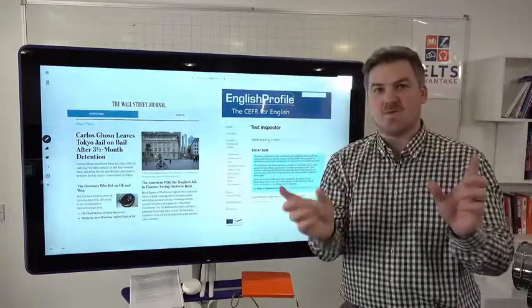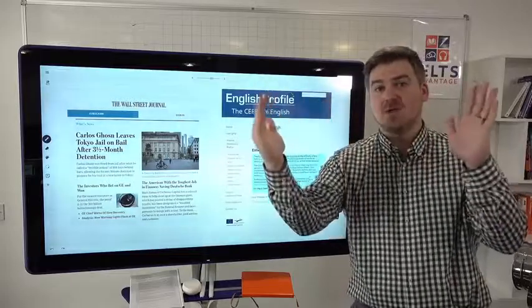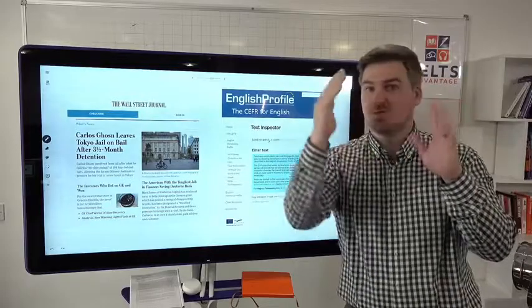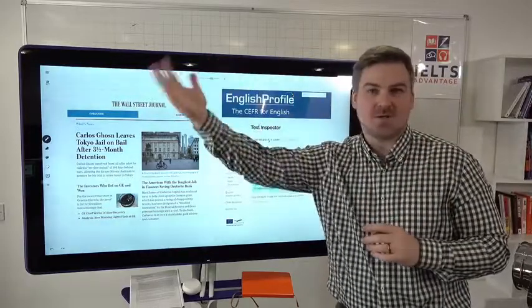And it will look at all of the words and it will give you a bar chart or a pie chart telling you which words are A1, A2, B1, B2, C1, C2.